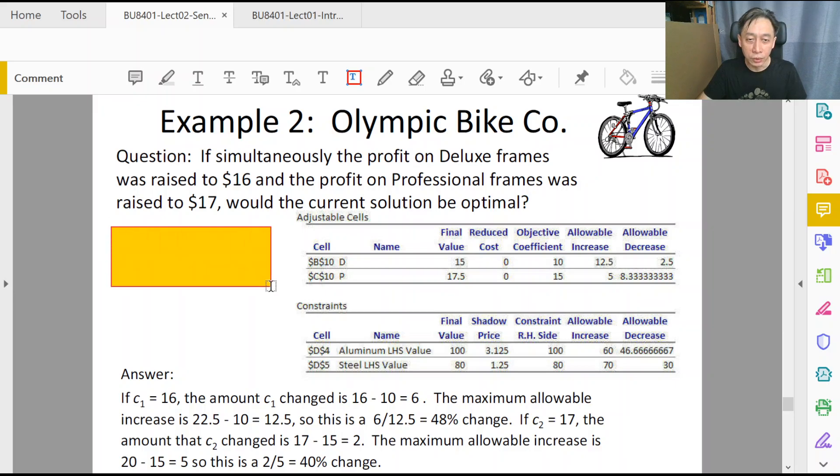Currently we have Deluxe showing a profit of $10, Professional frame showing a profit of $15, and the proposal is $10 goes to $16 and $15 goes to $17. So first thing first is to map out the direction of change. Because both are proposed to be increased, we know that the current coefficient is to go from $10 to $16, and the maximum allowable increase is up to $22.50.